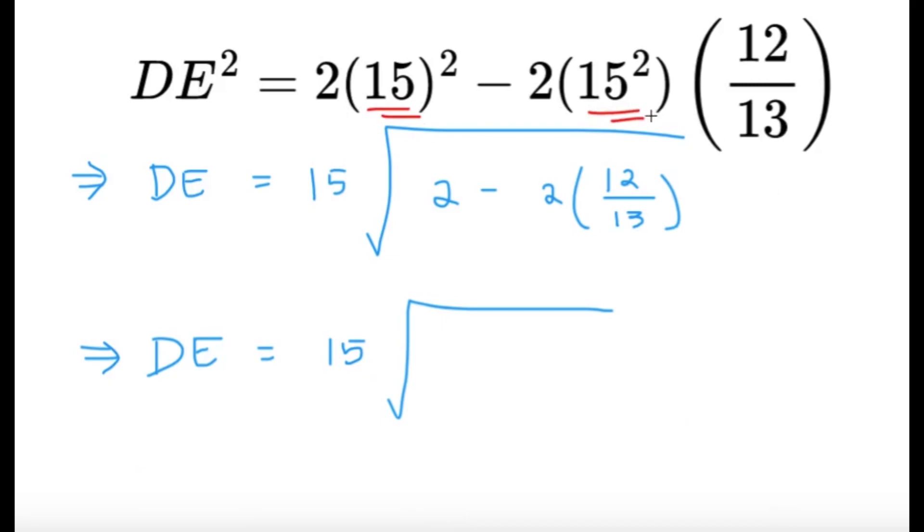Now, taking the square root, I can bring the 15 out, so DE would be equal to 15, after bringing out the square root, so it's 15 square root of 2 minus 2 times 12 over 13.